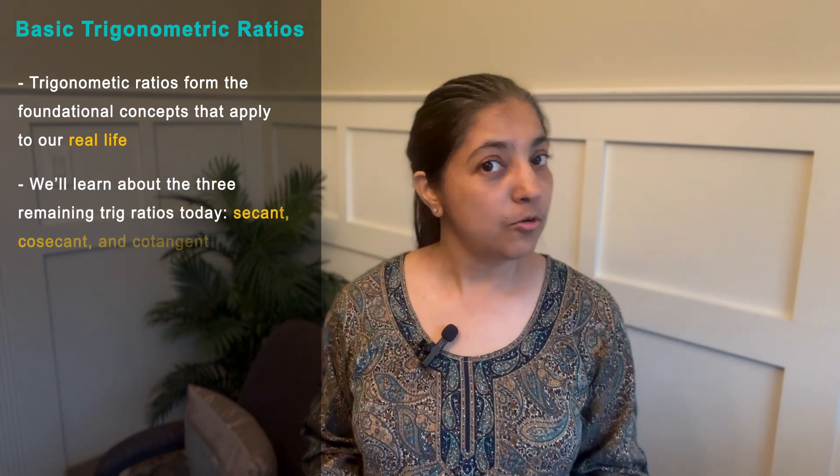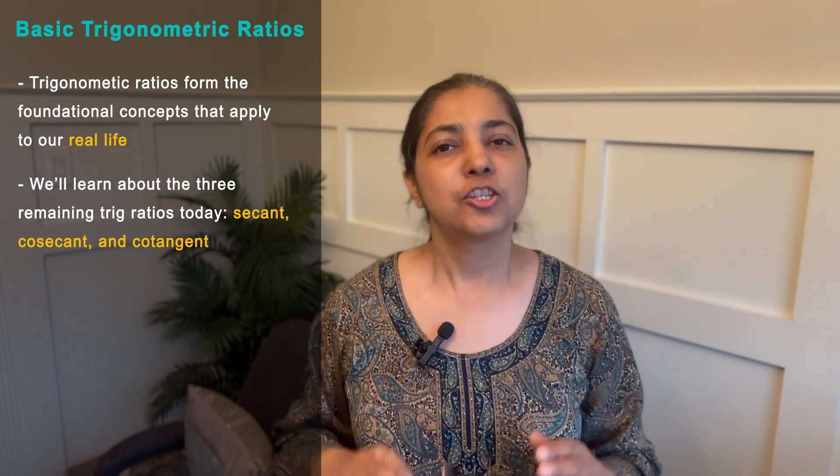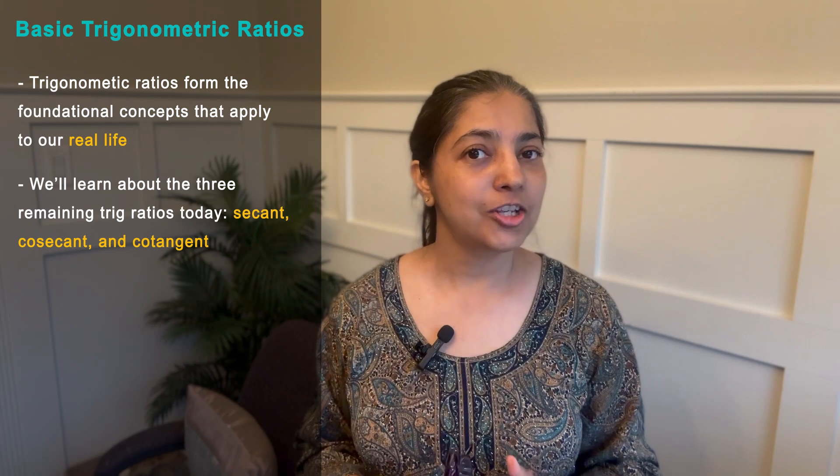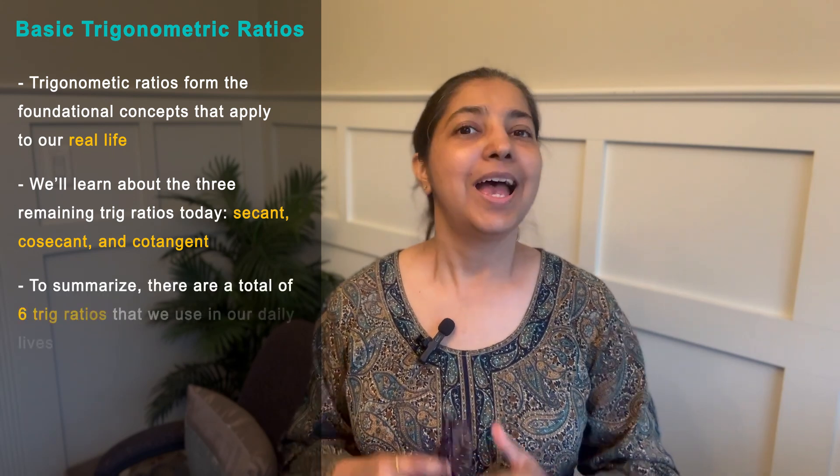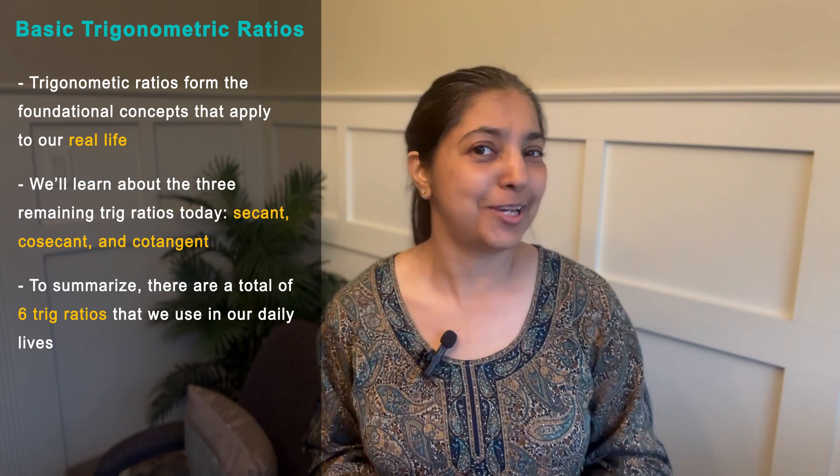So on one of my prior videos, I did mention sine, cosine, tangent. But there are three additional ratios: secant, cosecant, and cotangent that we are going to talk about on this particular video. So in summary, totally there are six trigonometric ratios that help us. Actually, they rule our life, day-to-day life.